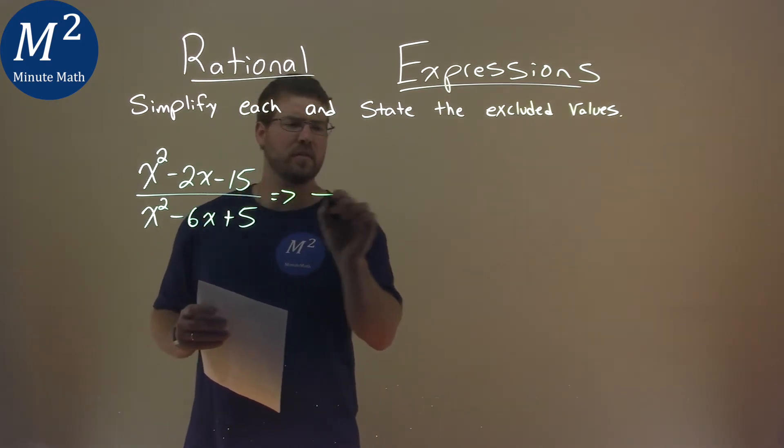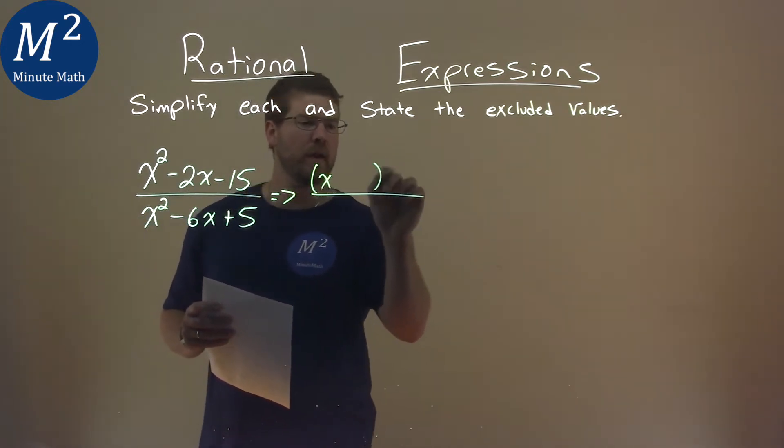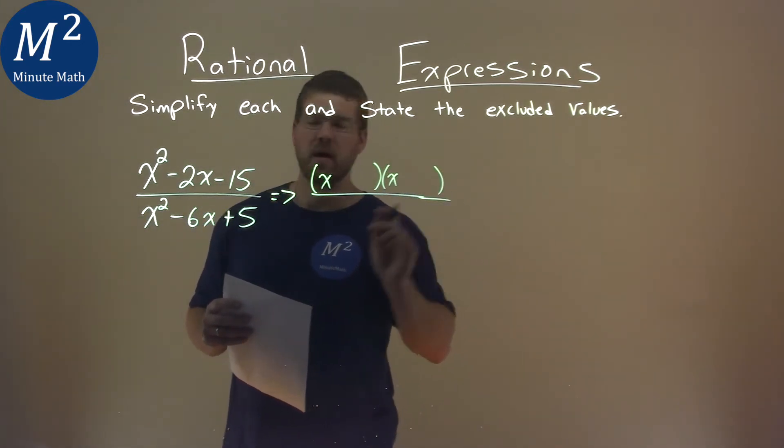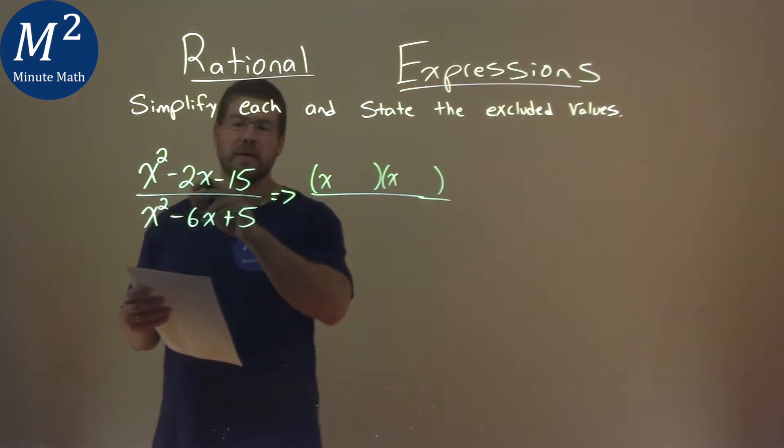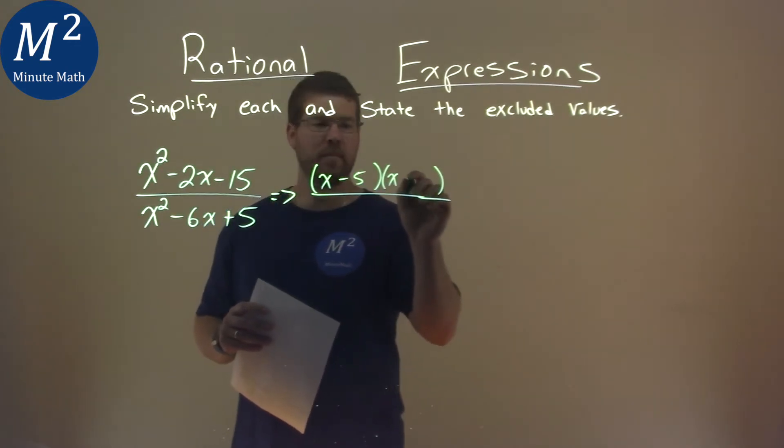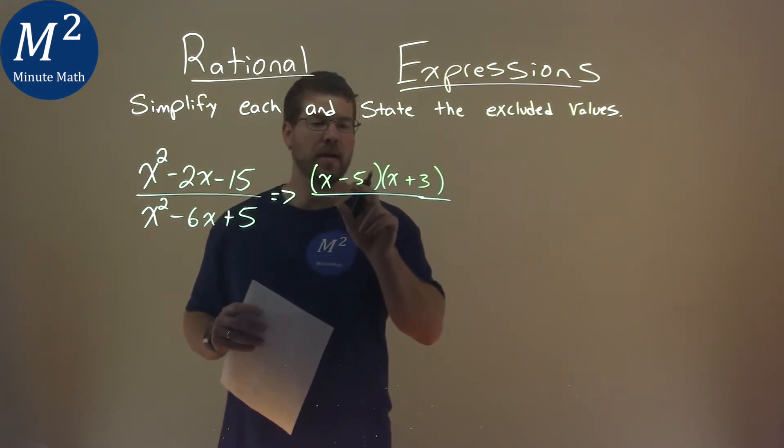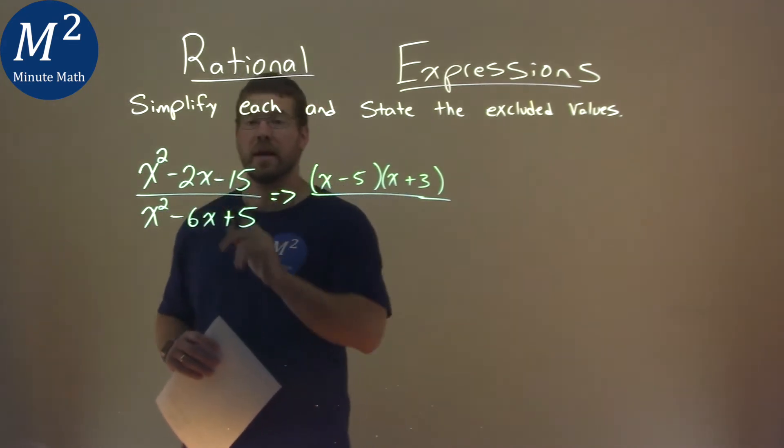To simplify this, let's factor the numerator and the denominator. We ask ourselves what two numbers multiply to be negative 15 but add to be negative 2, and that's going to be negative 5 and positive 3. Negative 5 times 3 is negative 15, but when we add the two, we get negative 2.